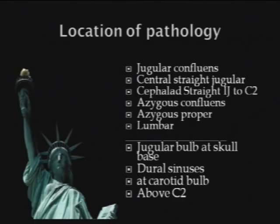I caution against interpreting narrowings seen at the jugular bulb at the skull base, in the dural sinuses on MR, at the area of the carotid bulb, or above C2. My thinking is that if you have an outflow obstruction of the jugular vein, blood gets rerouted away and the jugular vein is essentially underfilled, so anything adjacent to it will collapse it in those areas. I'm very worried about those and don't want to treat them unless necessary, as I think a lot of them are not real.